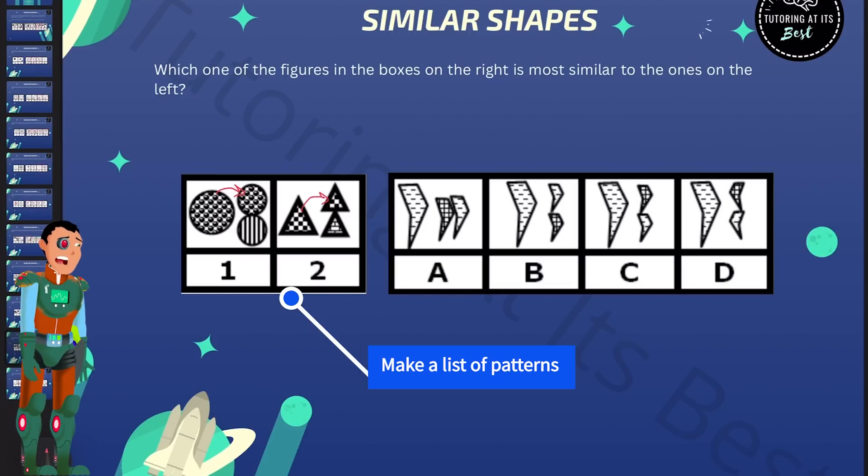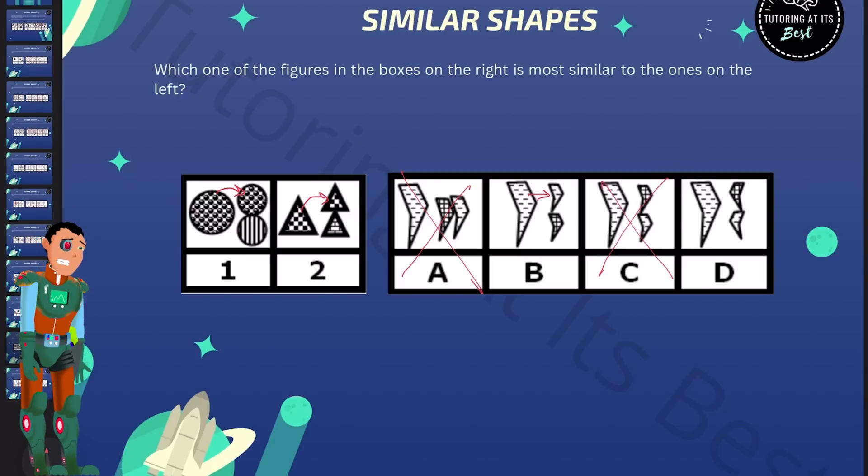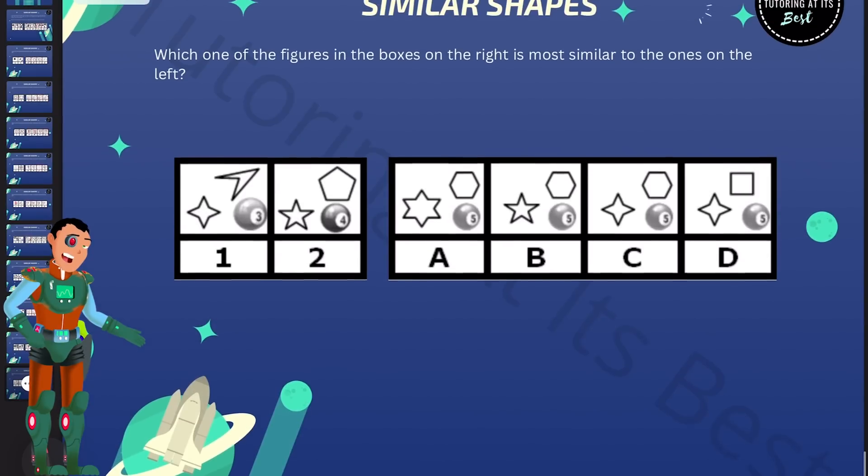So in box A, we can see that the smaller shapes are side by side. So that's incorrect. In box B, we can see that the top is actually the same and the bottom is different. So let's hold on to that one. In box C, the shading is upside down. So that's incorrect. And D looks like the smaller shapes have been reflected. So B is actually our answer. Beautiful work. And over to the last question.